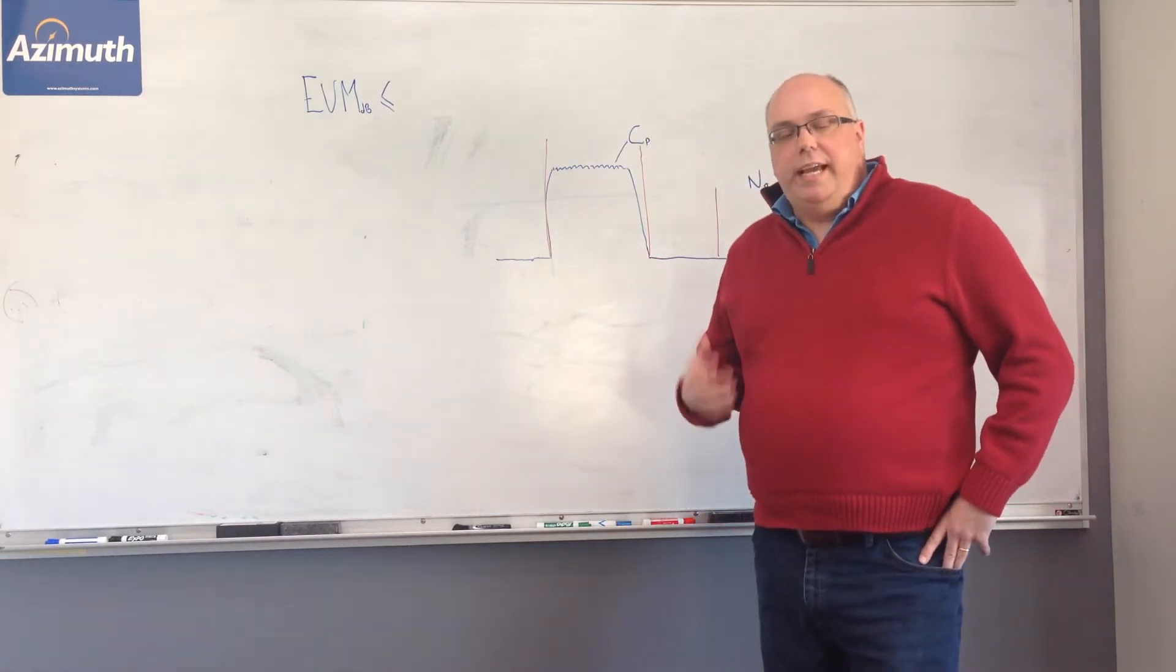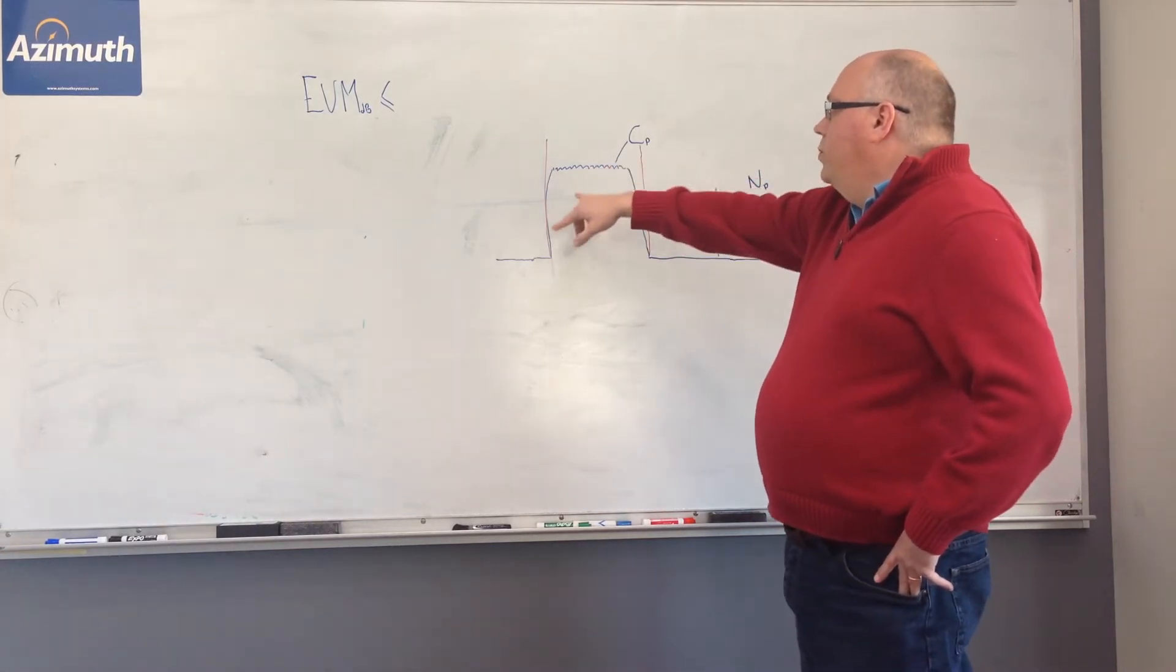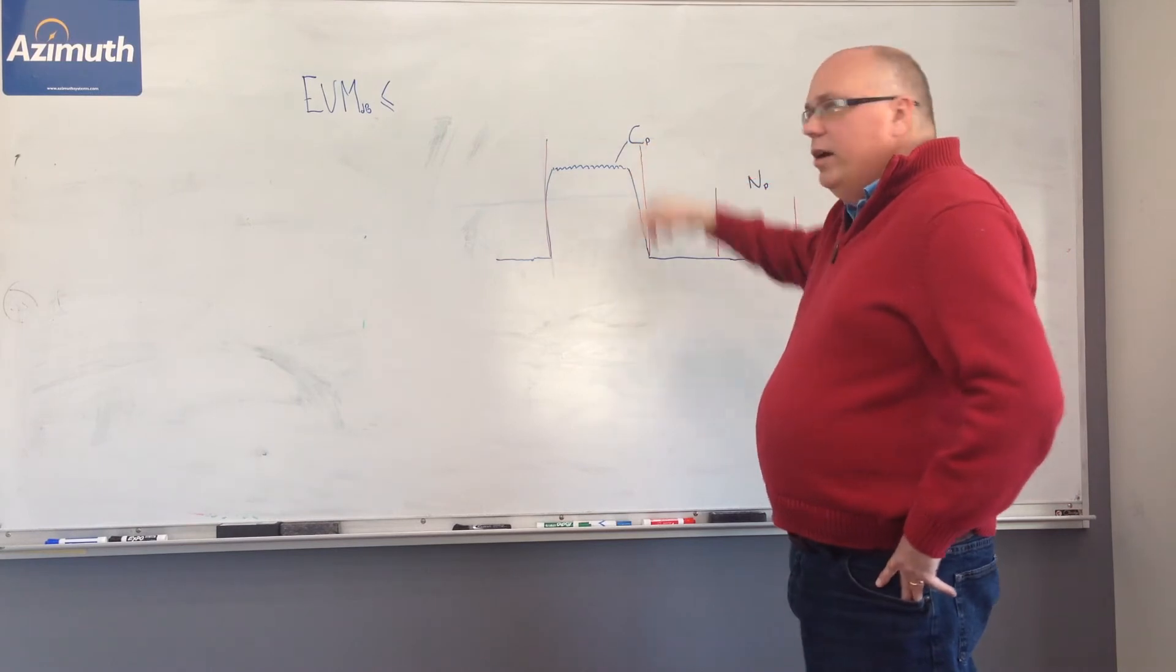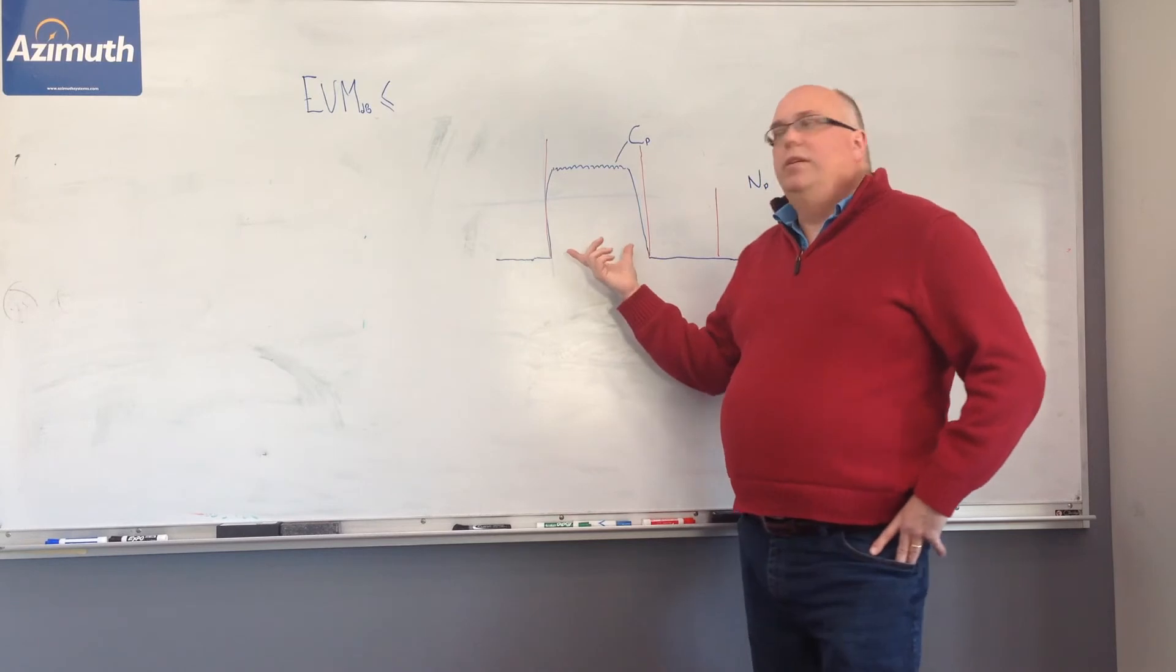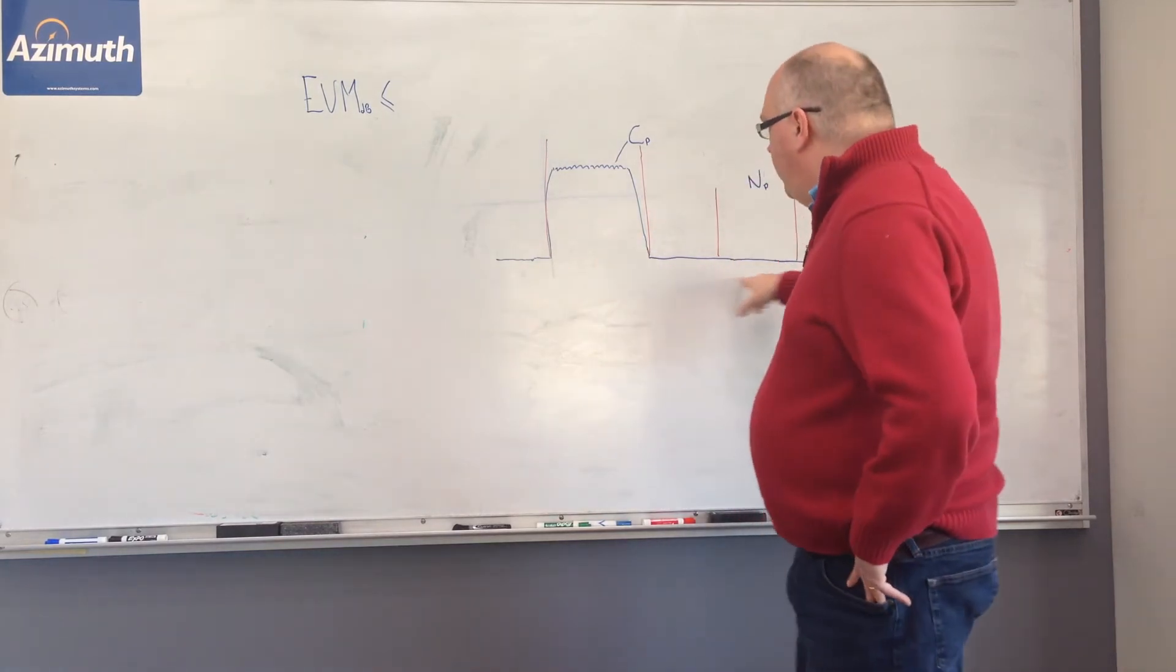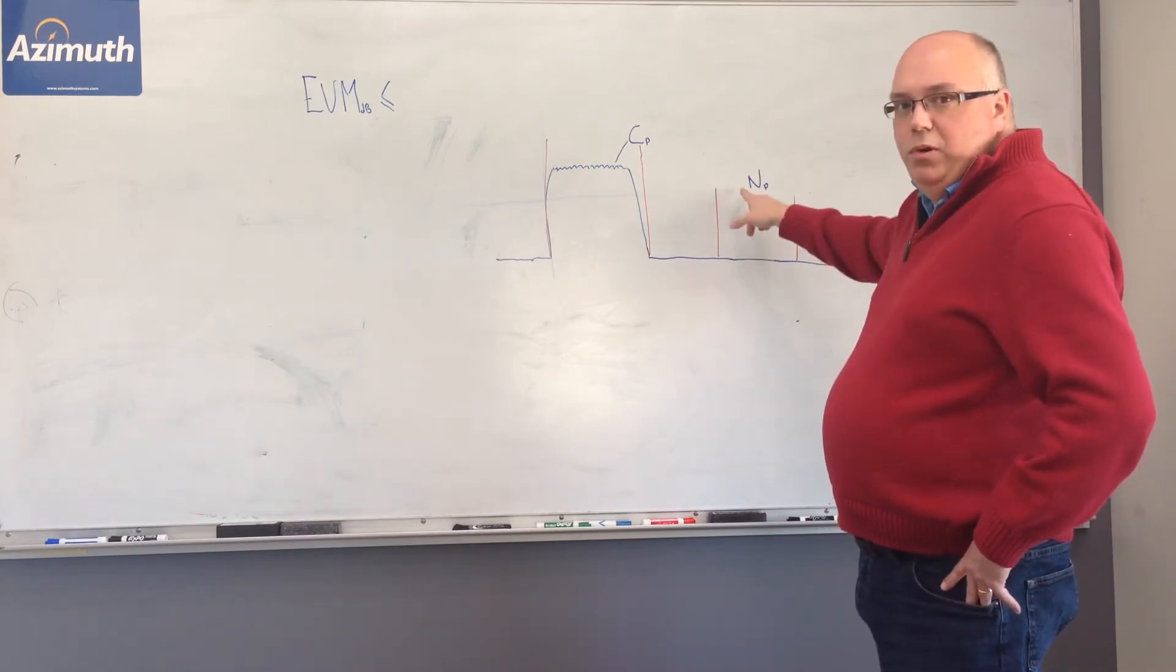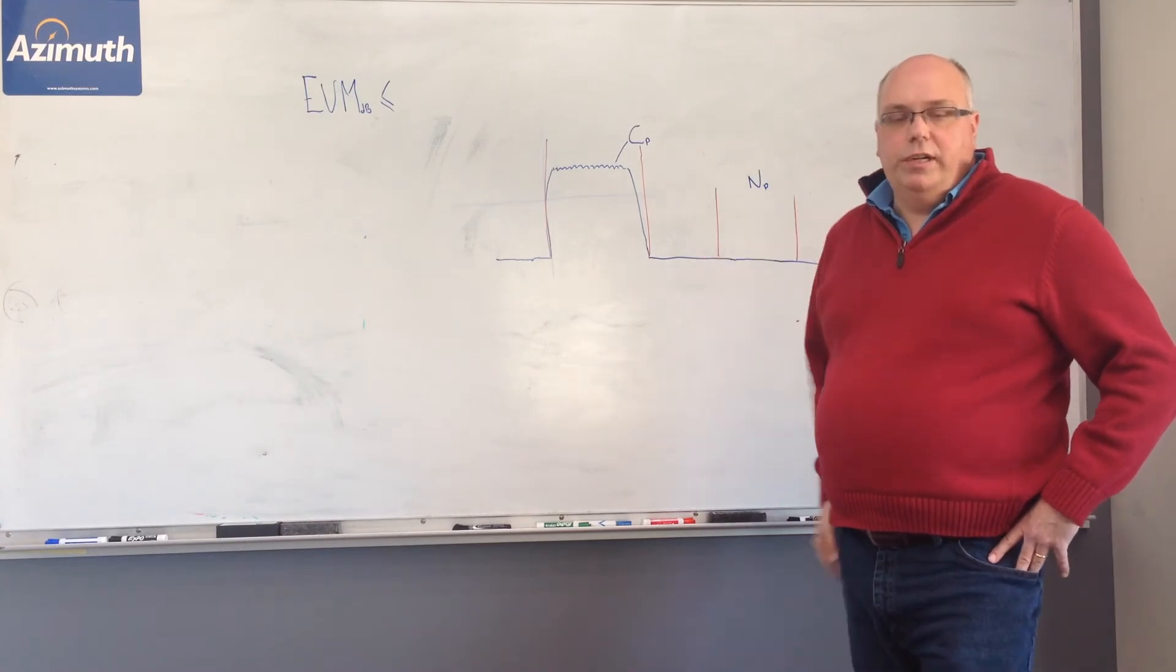All you do to take a carrier-to-noise ratio measurement is you measure the power in the modulation bandwidth directly with the spectrum analyzer. And we'll call that carrier power CP here. At that point, you either mute by some means the carrier, or alternatively, you move over maybe the second or third channel away. And you take a noise floor measurement, we'll call that N sub P, in the same bandwidth that you took your carrier power measurement.